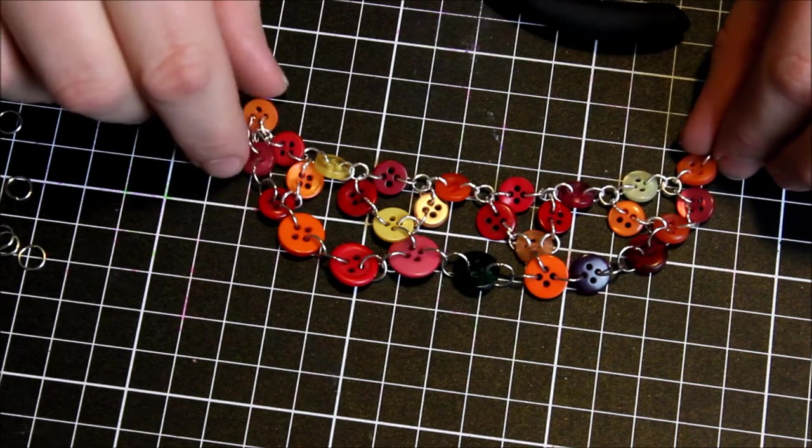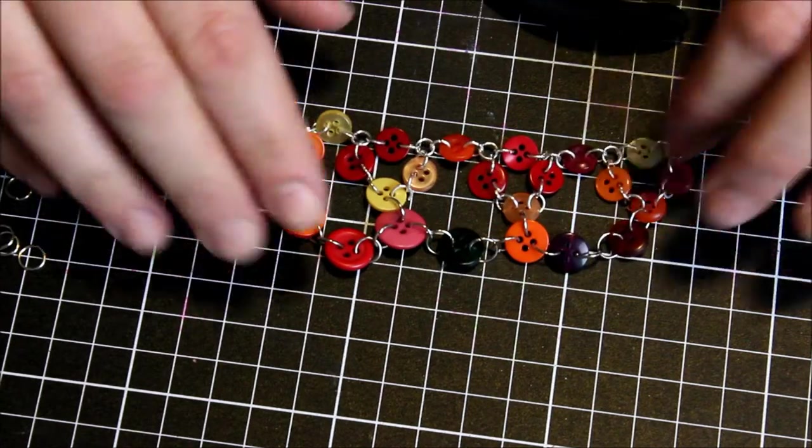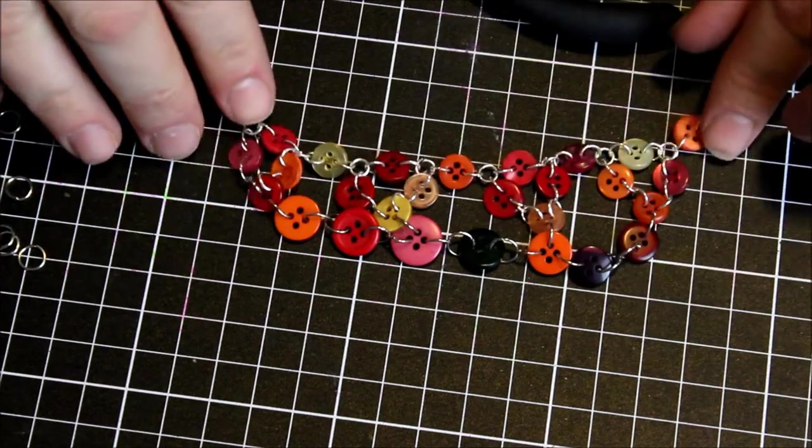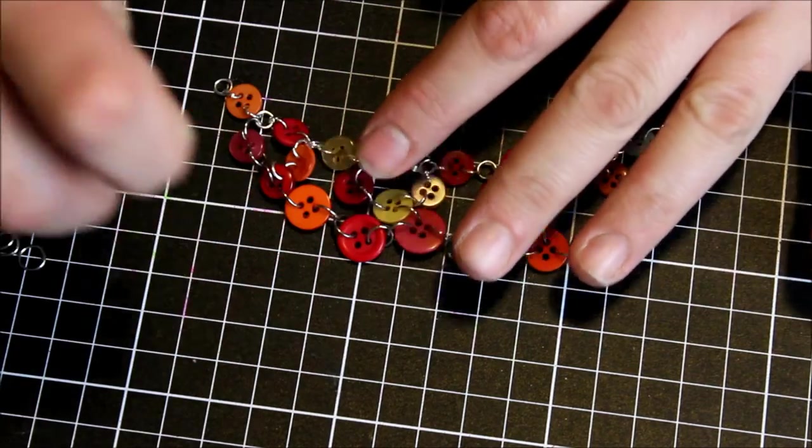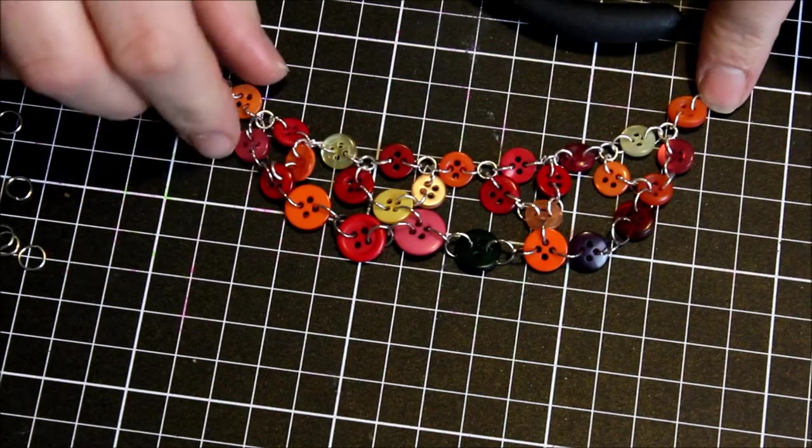And then the third row is just straight buttons that I've connected to sort of create a loop as well by connecting it back onto the loops of the second row of buttons.